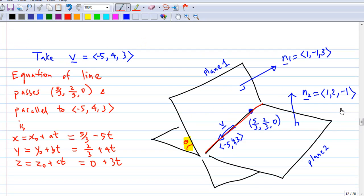So you can take v equal to (-5, 4, 3). So we have an equation of a line passing through (5/3, 2/3, 0) and parallel to (-5, 4, 3).